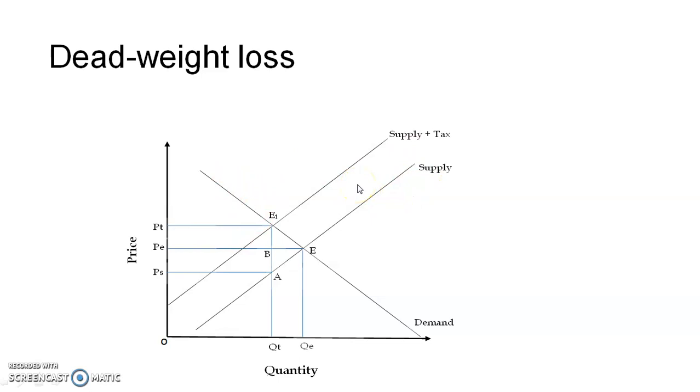Now let us examine what is the revenue for the government. Earlier at PE price there was no revenue for the government. Now the government revenue is, this is the price for the supplier and this is the price charged to the consumer. That is PT. So difference between PS and PT, that is the tax price. PS times the quantity, that is QT. Sorry, OQT.